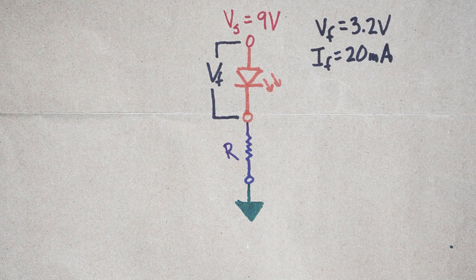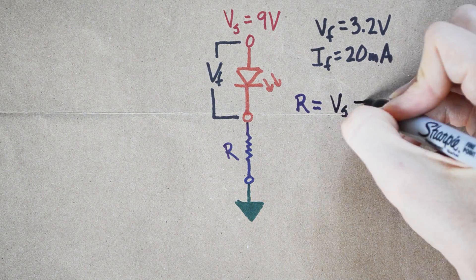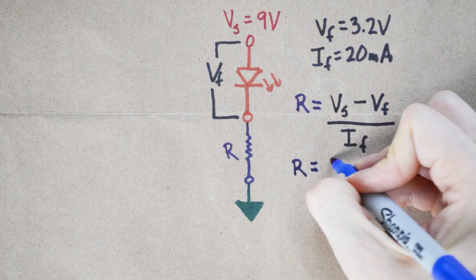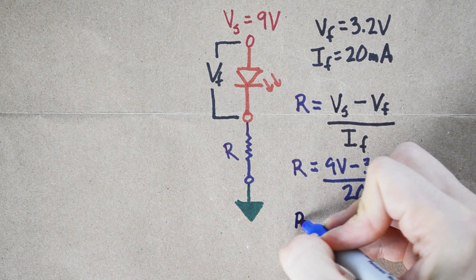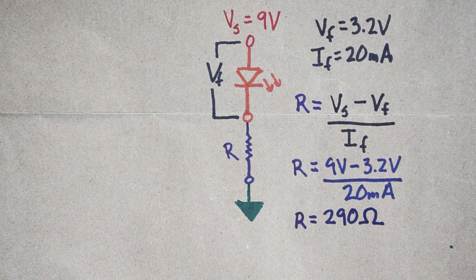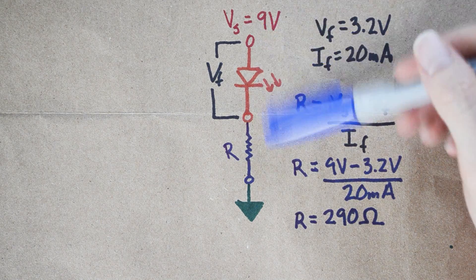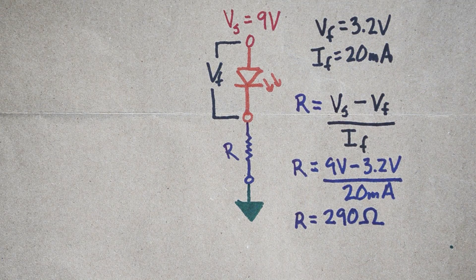There's a nice formula to help you pull that off. The resistor you want equals the voltage source minus the forward voltage, divided by the forward current. So in this case, to get R, we have 9 volts minus 3.2 volts over 20 milliamps. That gives us a resistance of 290 ohms — maybe a little bit higher if you want to be safe, but 290 ohms. What we get is 3.2 volts dropping across the LED and a current pull of 20 milliamps. So that's cool.